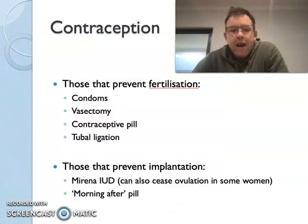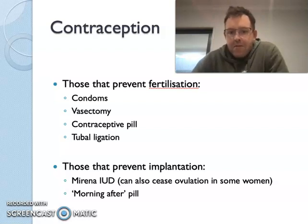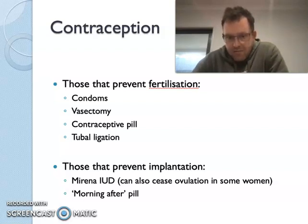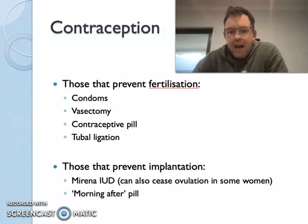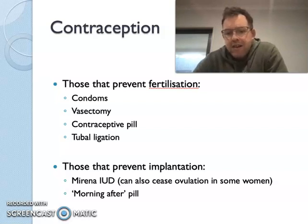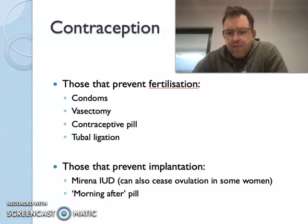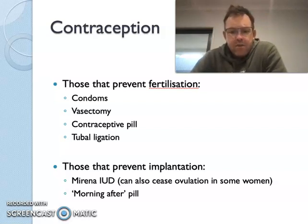Going back to the types of contraception — those that prevent fertilization include condoms, which stop sperm entering the uterus; vasectomy, which stops sperm from exiting the male; the contraceptive pill, which is a hormonal control; and tubal ligation, which stops the ovum from reaching the uterus or sperm continuing up the fallopian tube. If we're looking at what ones prevent implantation, you've got the IUD, which is the device that sits in the uterus and can also cease ovulation in some women, and the morning after pill, which is designed to prevent implantation as well.